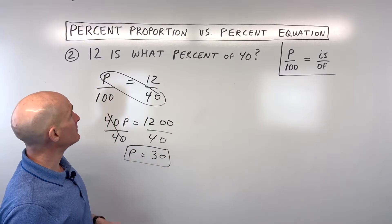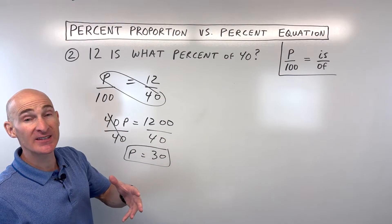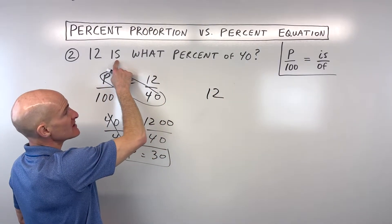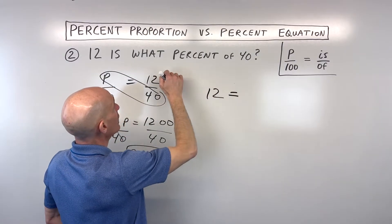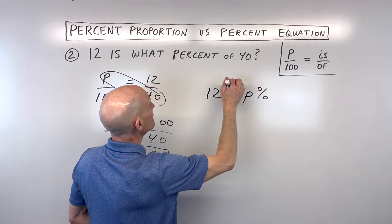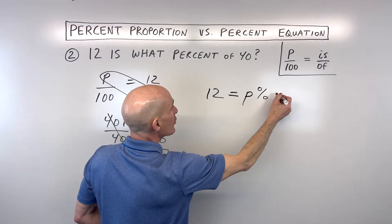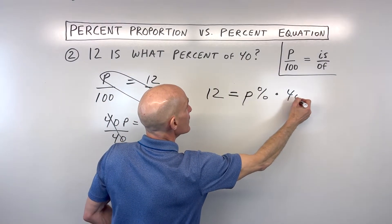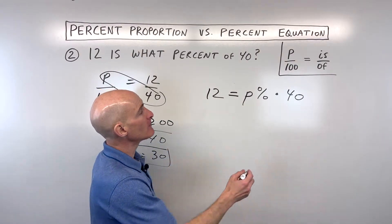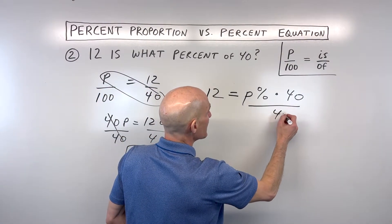Now if we want to do the equation method, we're going to do it like we're translating. We're going to say 12 is, means equals, what percent we don't know. So let's write this as p percent of, remember means times or multiplication, 40. So we want to get our variable by itself. What's the opposite of multiplying by 40?